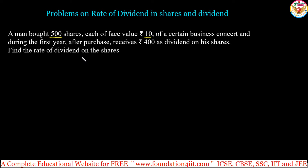So rate of dividend is: dividend divided by the investment, into 100. We need to find out the investment. Let us take the given data first.